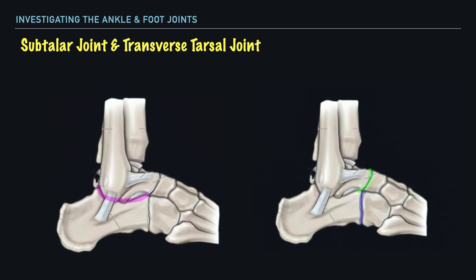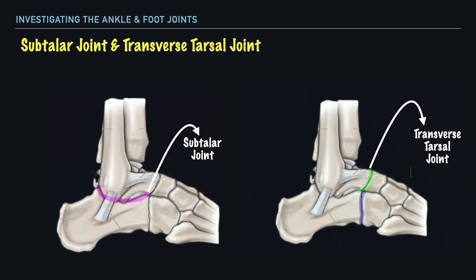The next joint we'll take a look at is the subtalar joint and the transverse tarsal joints. Specifically, the subtalar joint is made up of the articulation between the talus and the calcaneus. The name of this joint alone indicates we're looking at a joint that is underneath — hence the word sub — and then talus, referring to the talus, so a joint that is underneath the talus. Next is the transverse tarsal joint, which is the combination of two joints, also known as Chopart's joint. It represents the articulation between the talus and navicular, shown here by the green highlight, and the calcaneus and the cuboid, shown here by the purple highlight.